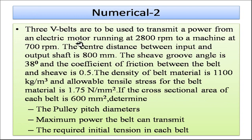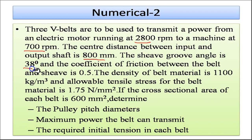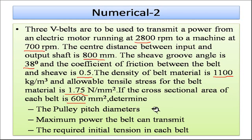Now we go to the next numerical on V-belts. Three V-belts are used to transmit power from an electric motor running at 2800 rpm to a machine running at 700 rpm. The center distance between input and output shaft is 800 mm, the sheave groove angle is 38°, and the coefficient of friction is 0.5.